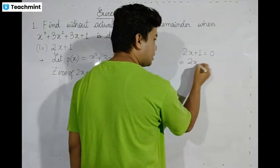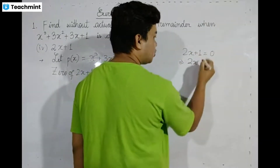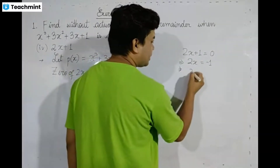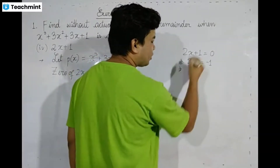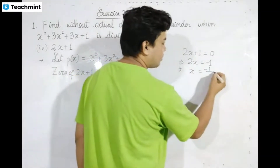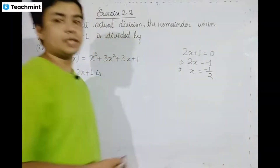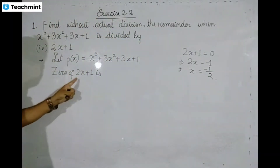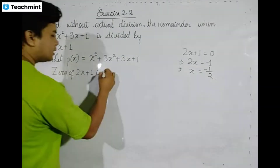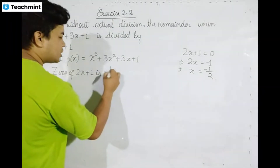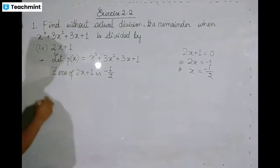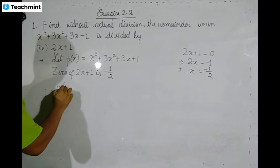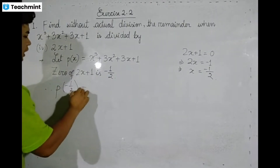2x plus 1 is equal to 0, so 2x equals minus 1, therefore x is minus 1 by 2. The zero of twice x plus 1 is minus 1 by 2. Therefore, p of minus 1 by 2 is equal to what?